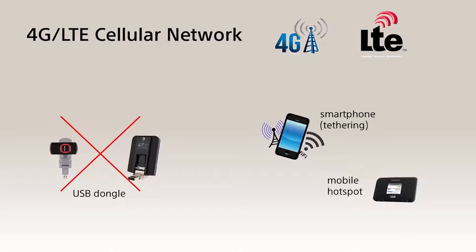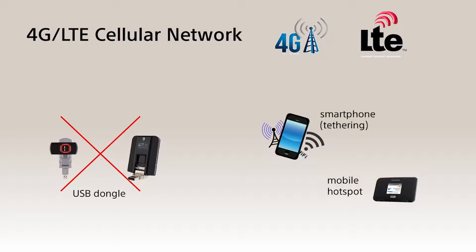To use 4G LTE public networks, you will need a mobile hotspot or a smartphone with tethering service activated. It is not possible to use USB dongles available from cellular carriers. Having the network connection, there are two major functions you can use with our camcorders: file transfer and live streaming.